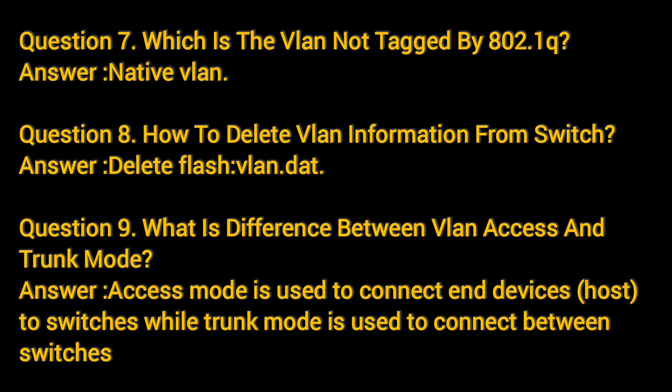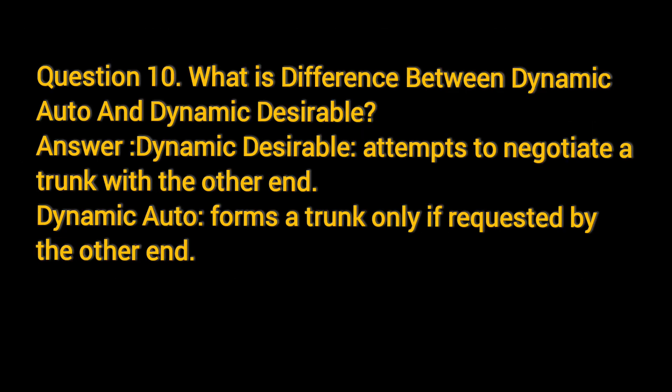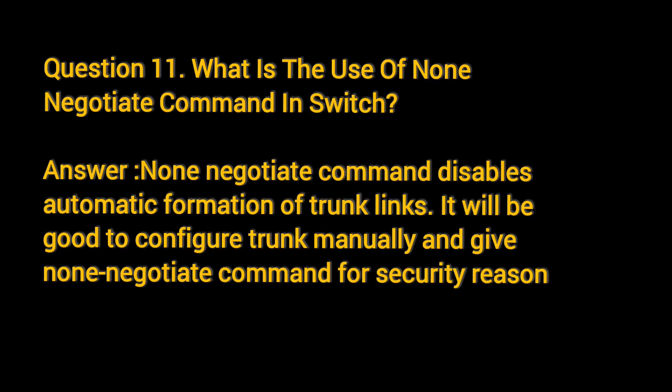Trunk mode is used to connect between switches. Question 10: What is the difference between dynamic auto and dynamic desirable? Dynamic desirable attempts to negotiate a trunk with the other end. Dynamic auto forms a trunk only if requested by the other end. Question 11: What is the use of the non-negotiate command on a switch?